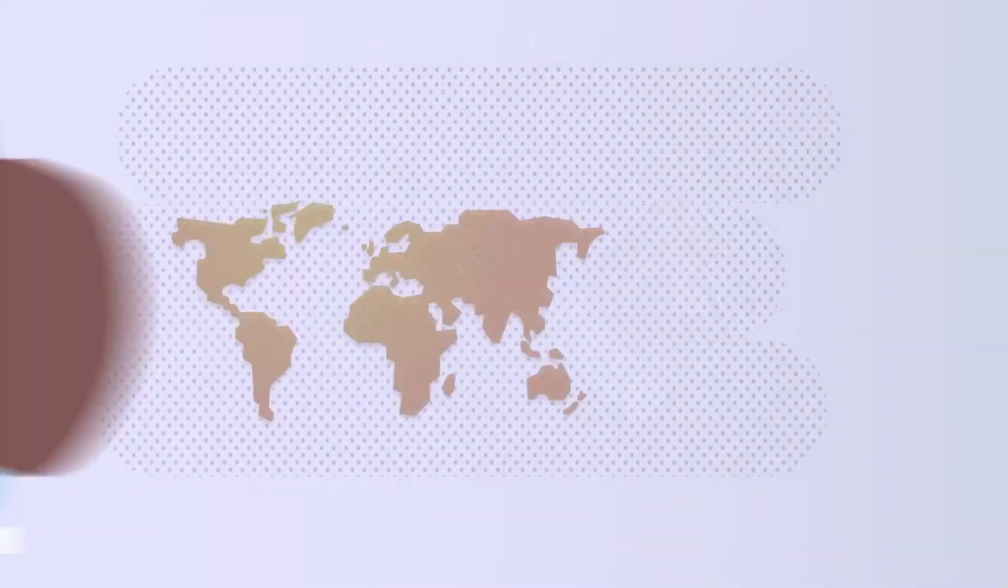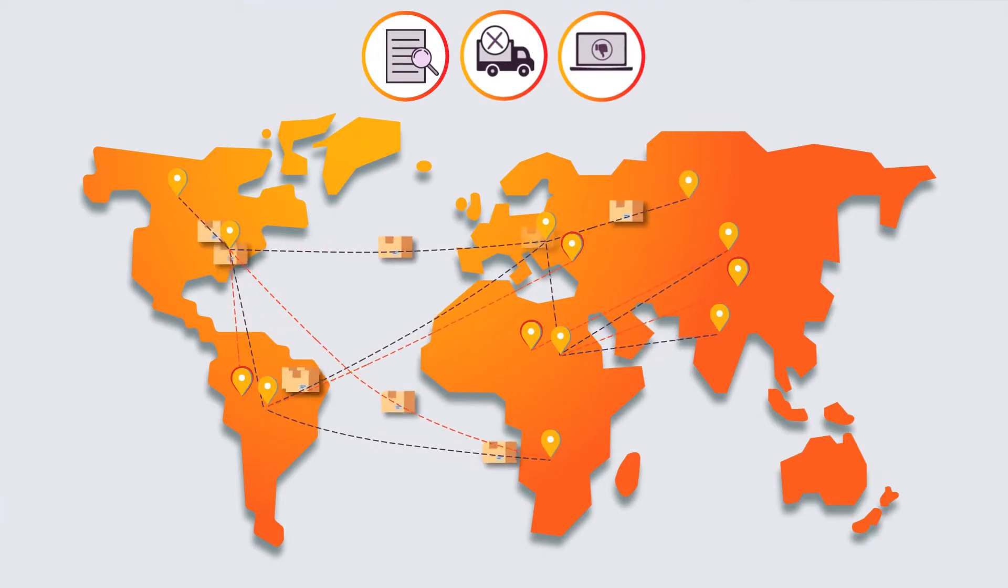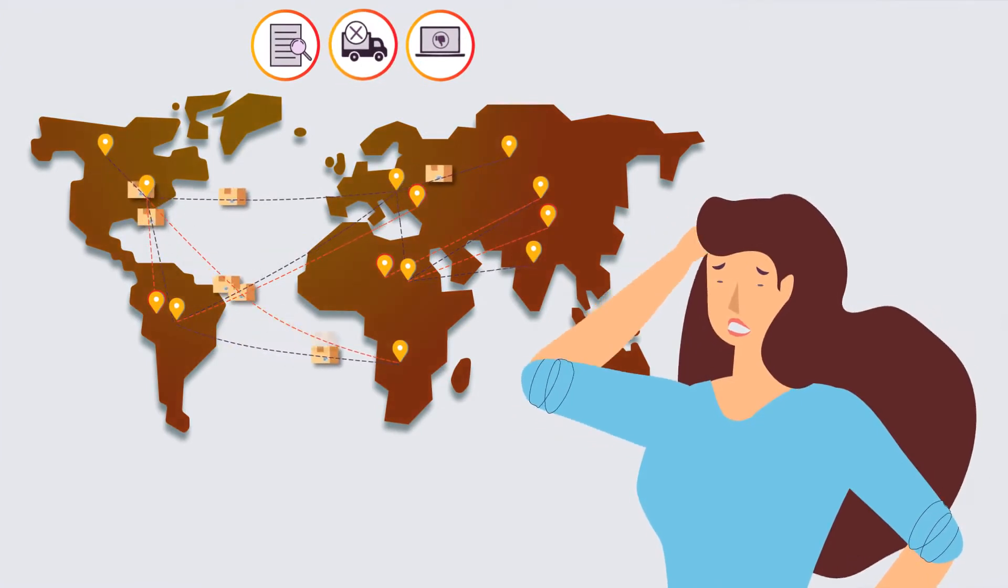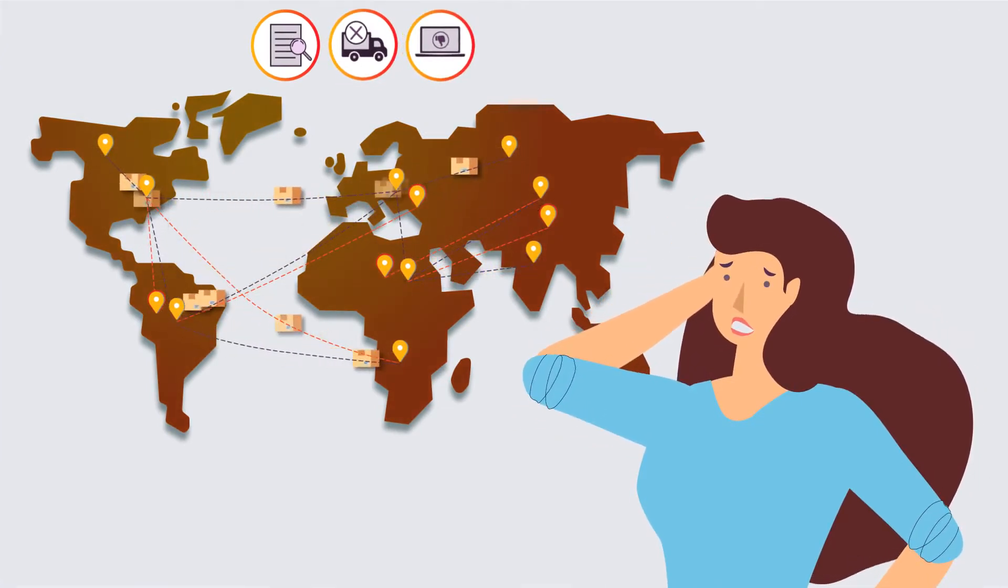Jenny is often inefficient and ineffective when it comes to managing the movement of her products around the globe. This is due to a lack of transparency, inadequate tracking, and the absence of a unified digital platform for facilitating secure transactions.